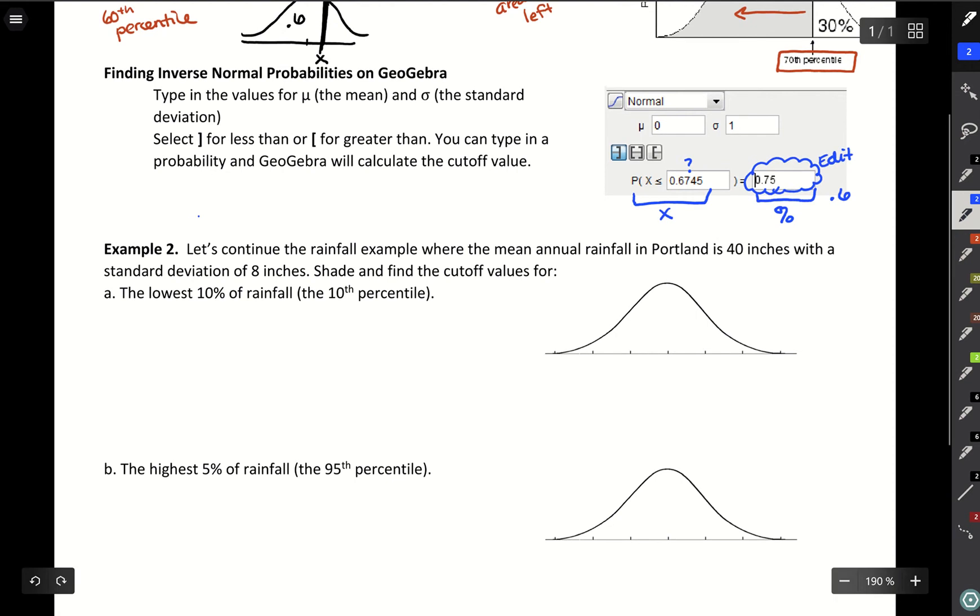We're going to go back to rainfall which is where we had a normal distribution, mean of 40, standard deviation of 8, and let's start with this lowest 10%. So lowest 10%, that's going to be to the left hand side. All your low values are to the left, high values are to the right. So lowest 10% is equivalent to the 10th percentile.